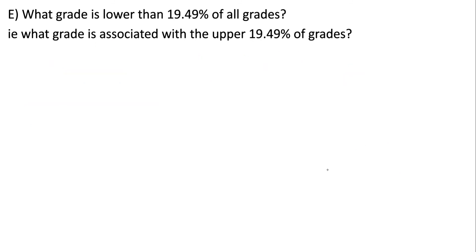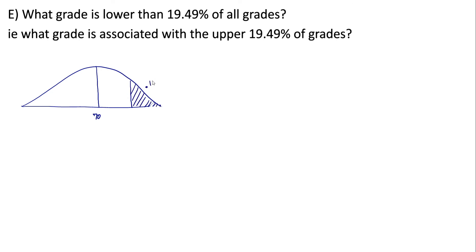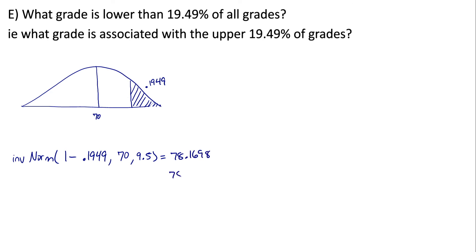One more example: what grade is lower than 19.49% of all grades, or what grade is associated with the upper 19.49% of grades? Drawing the picture: since we're lower than less than the upper 50%, the shaded region is an upper tail of 0.1949. For the calculator, the area to the left is 1 minus this shaded piece. Using inverse normal with mean = 70 and standard deviation = 9.5, we get 78.1698, or 78.17.